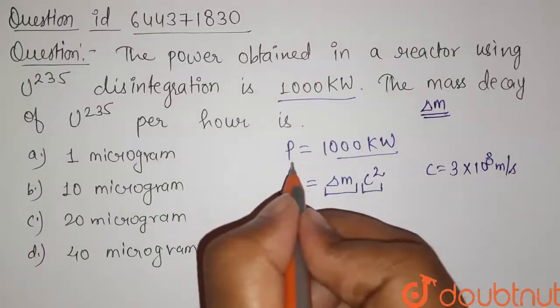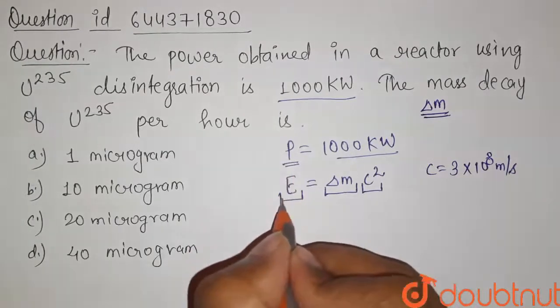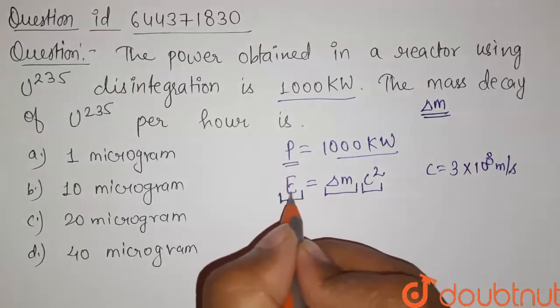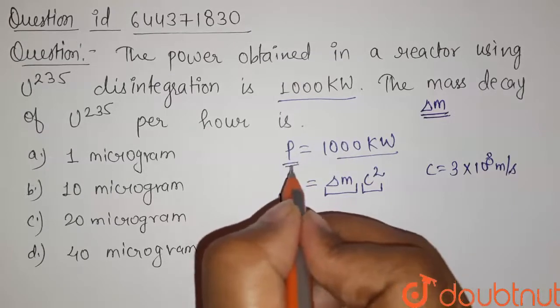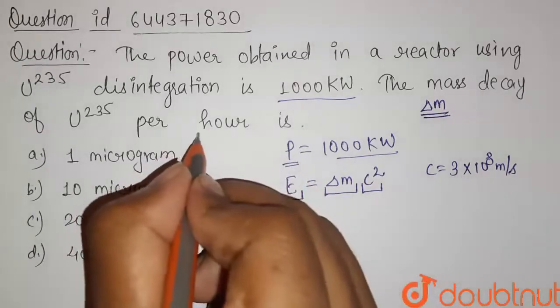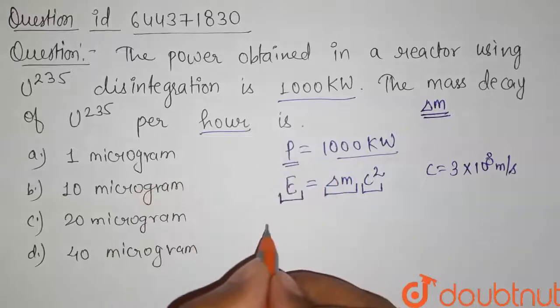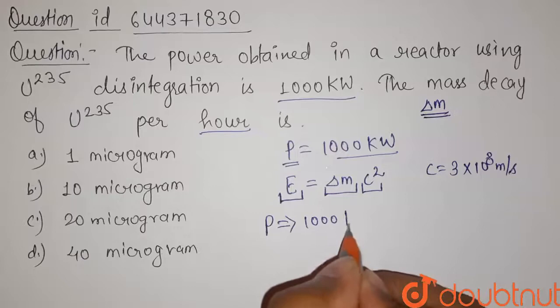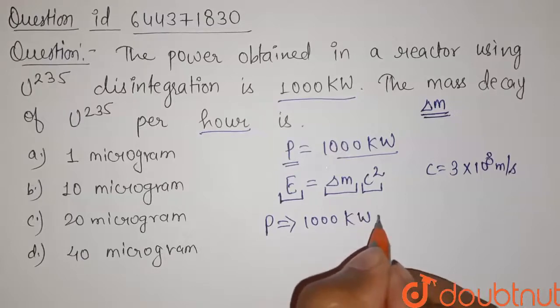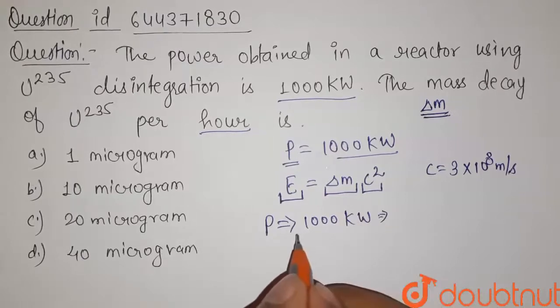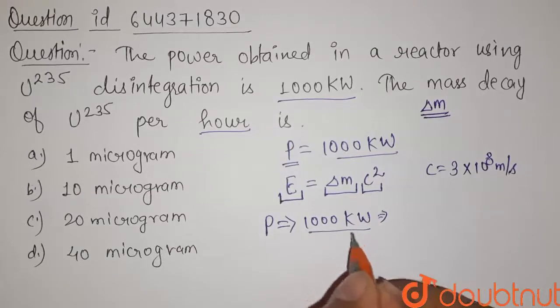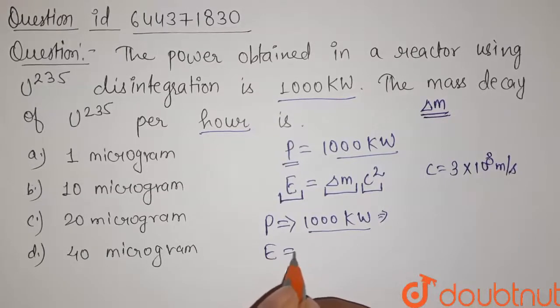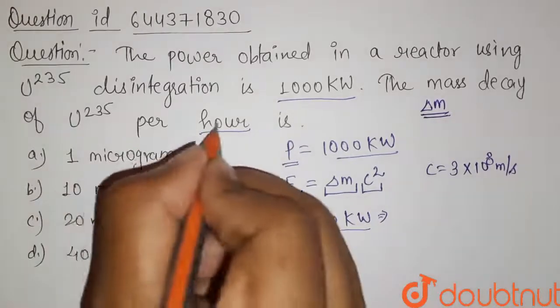But here in the question, we have been given the power, and in the formula we require the energy. So first of all, we have to find the energy released in one hour. Power is the energy released in one second, and here it is 1000 kilowatts, so it is the energy in one second. That is why the energy for one hour...